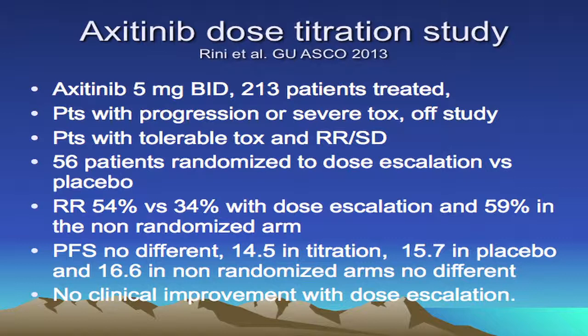Response rates and progression-free survival were no different and definitely not better with dose escalation compared to placebo. Again, there appears to be a threshold effect for efficacy, and beyond that threshold the incremental advantage tends to be fairly small with a major increase in toxicity. PK studies of sunitinib showed that about 8% of patients had PK levels at 50 mg equivalent to those seen at 75 mg doses, demonstrating significant inter-patient variation.